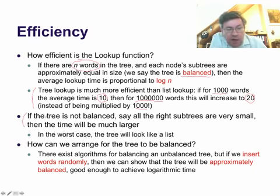But if the tree is not balanced, for example, all the rightmost subtrees are very small, the time is going to be bigger. And in the worst case, the tree is going to look like a list if all the elements are on one side.